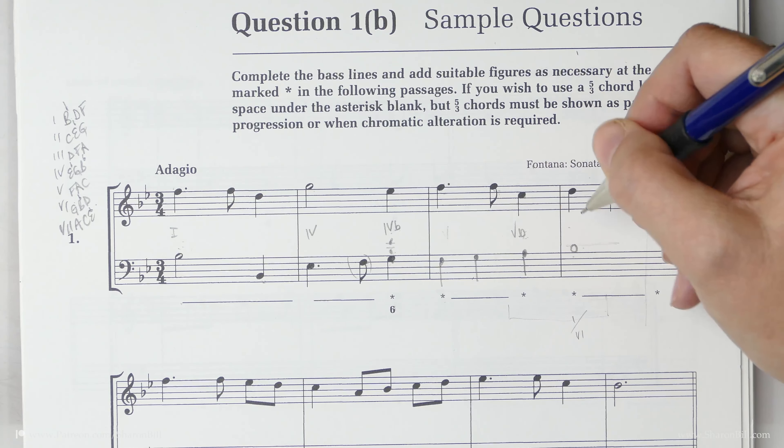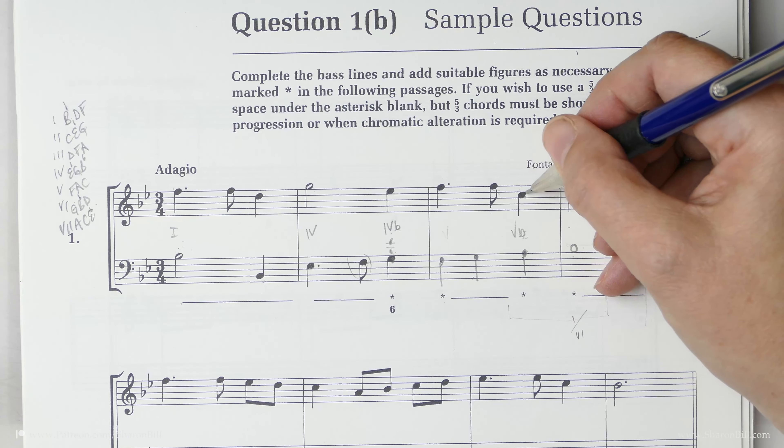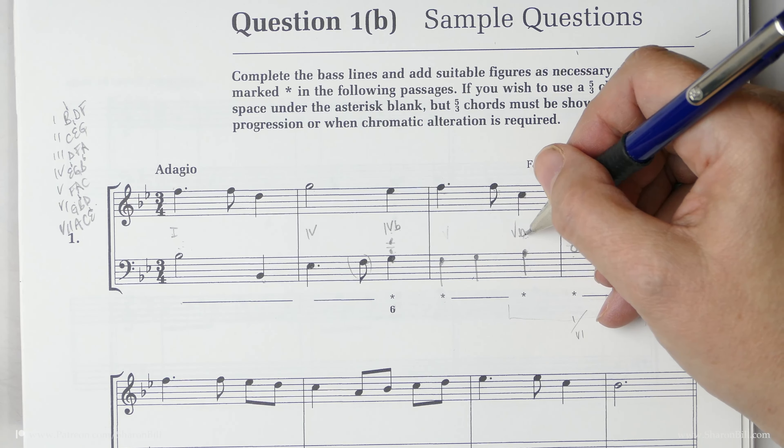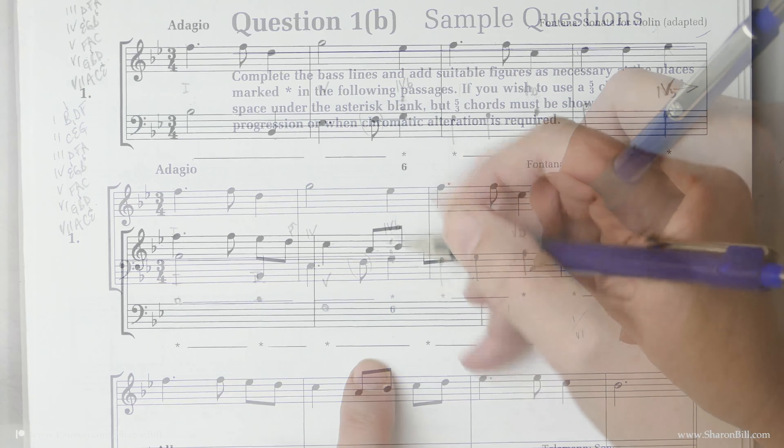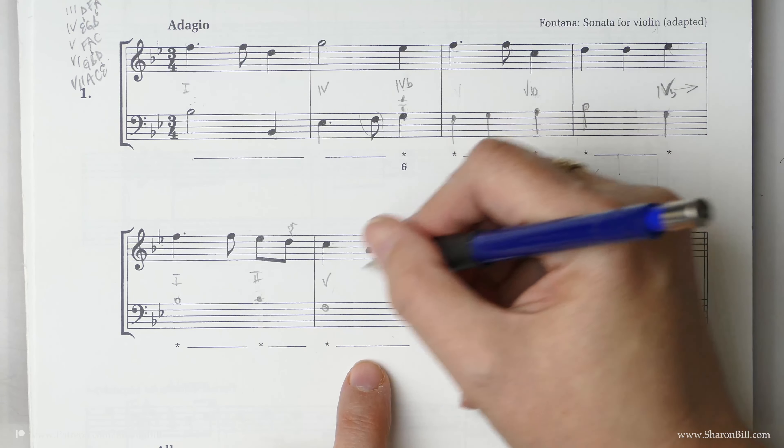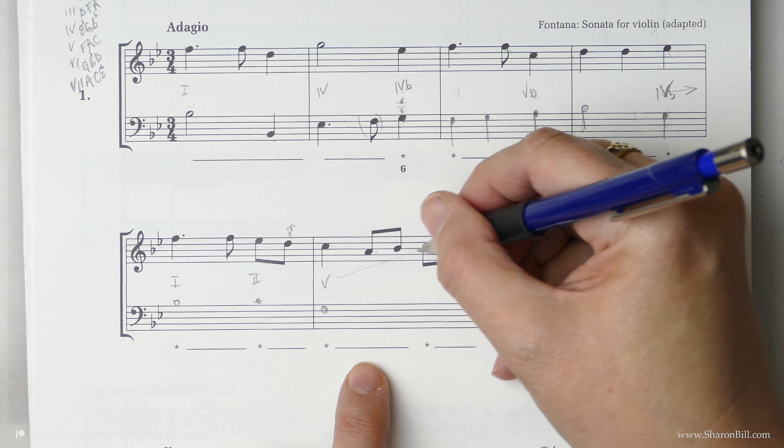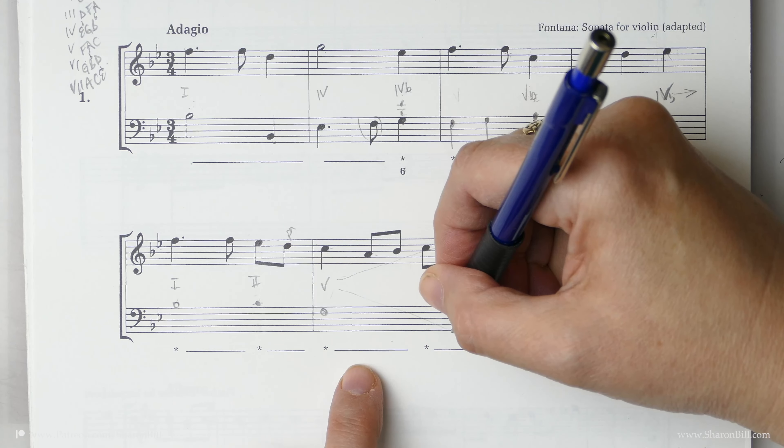So that's a third A C and we've got the right notes. Because that's a C we couldn't have the C in the bass because that would double the third in the chord V which wouldn't be allowed, it wouldn't flow very musically either.